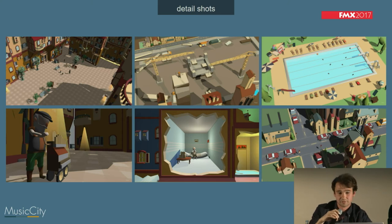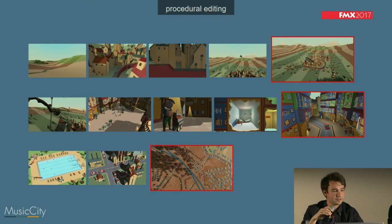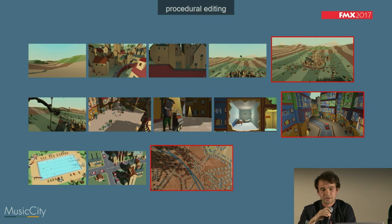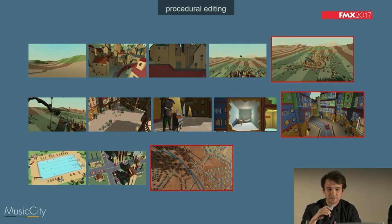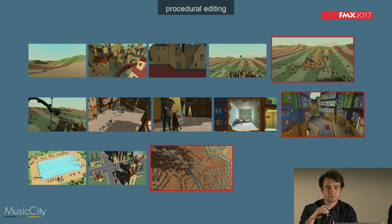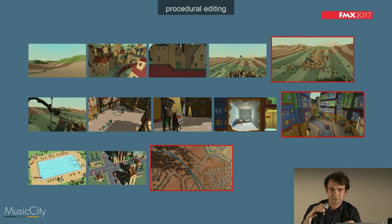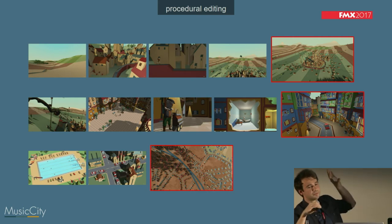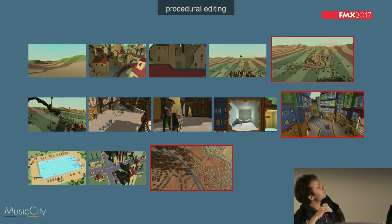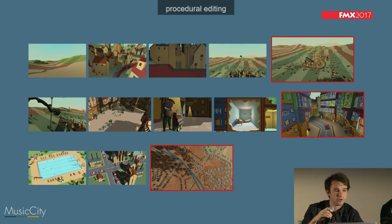We had lots of shots and they also had to be in some kind of order, so it had to be edited. For that we use a kind of artificial intelligence that picks, for every piece of music, specific sceneries and then assembles all the shots together. For example, there are detail shots, and when there is a refrain, a big bass drop, or something like that, it adds those red frames.